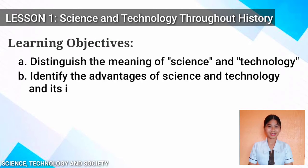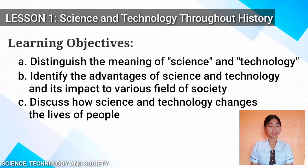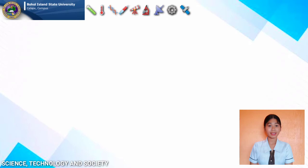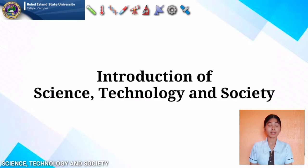Students are expected to be able to: distinguish the meaning of science and technology; identify the advantages of science and technology and its impact to various fields of society; and discuss how science and technology change the lives of the people. In this lesson, let us start with the introduction of Science, Technology and Society.